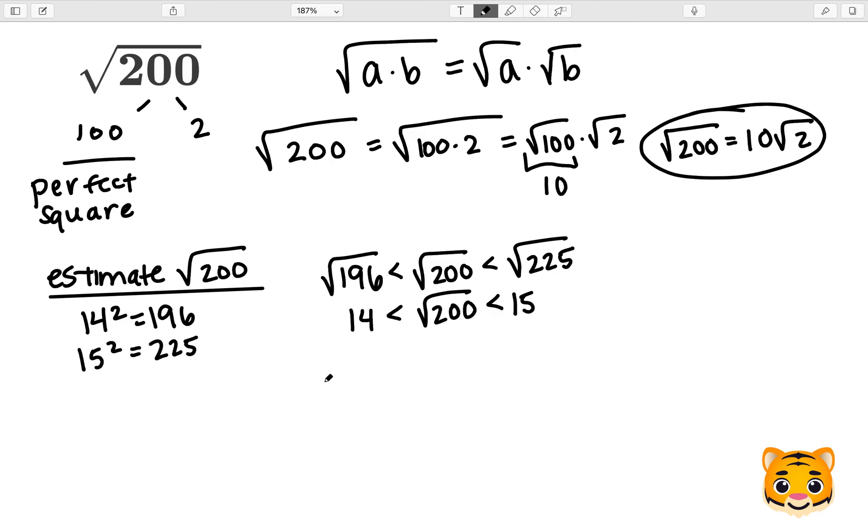To do this we will subtract them. When we do 200 minus 196 we get 4, and when we do 225 minus 200 we get 25. We can then see that 200 is closest to 196. Therefore, the square root of 200 will be closest to 14.